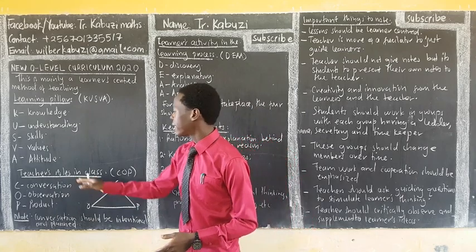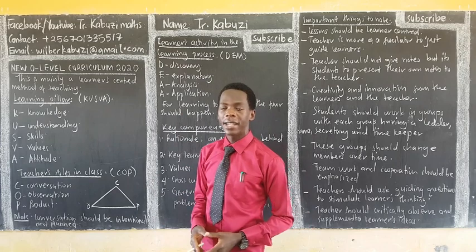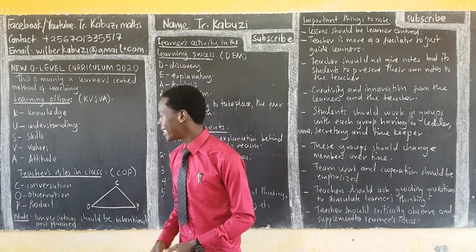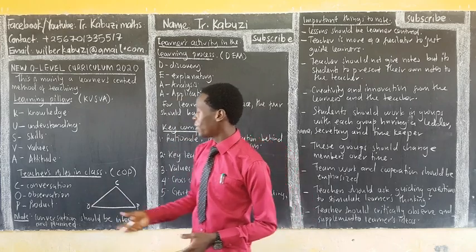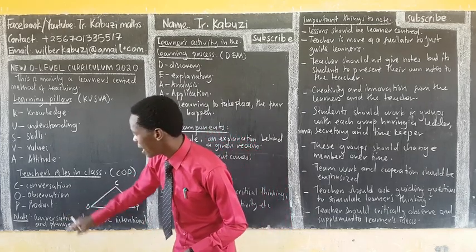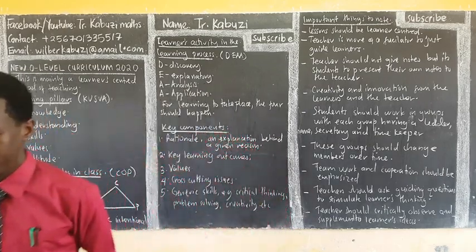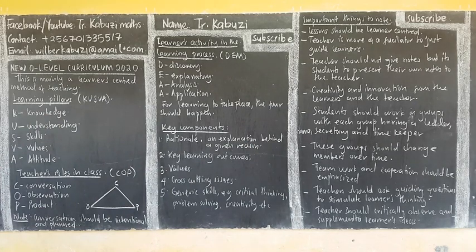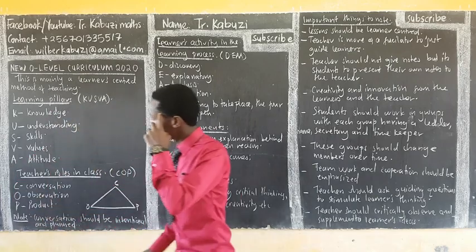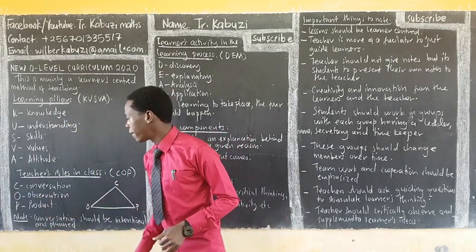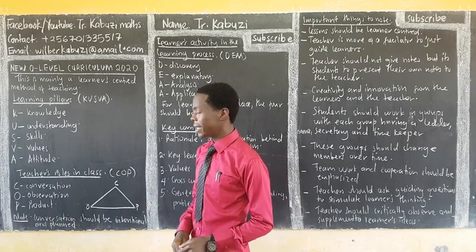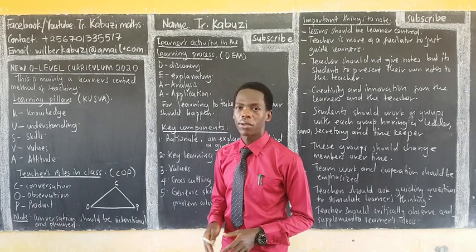The teacher's roles in class are abbreviated as COP. This means you are going to be Conversing with students, you are going to be Observing, and then you are going to be a COP — then producing a product. This is going to be summarized with a triangle.